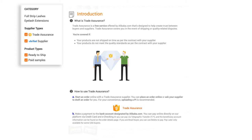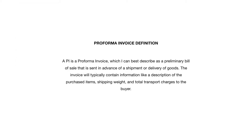Now, back to the PI — a PI is a pro forma invoice. I can best describe it as a preliminary bill of sale sent in advance of a shipment or delivery of goods. The invoice typically contains a description of the purchased items, shipping weight, and total transport charges to the buyer. I suggest that especially in the beginning, you always create the invoice and send it to your supplier to agree to, then have them send it back to you — until you have established a rapport or relationship with your suppliers. This is about common sense and protecting your investment.